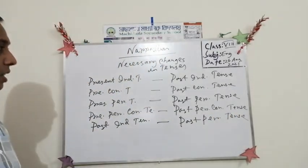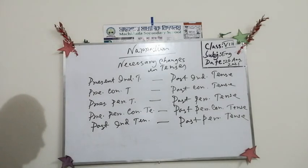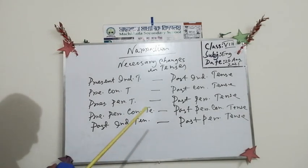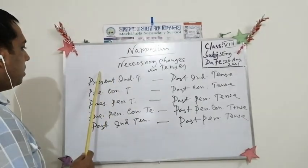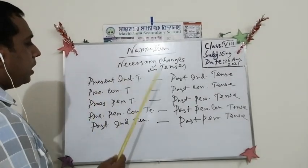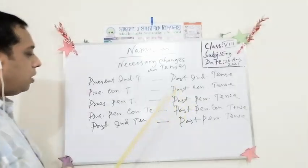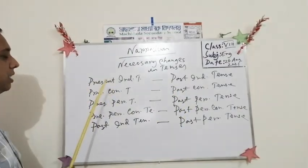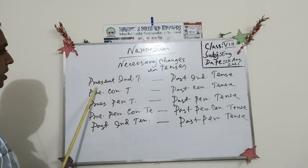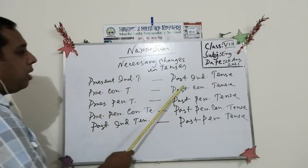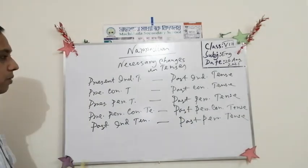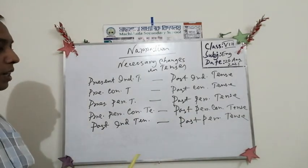So these are the necessary changes. We will see in the sentences when we are going to change from direct narration to indirect narration. So if we find any reported speech in present indefinite tense, it will become past indefinite tense. In this way, we will have to change.